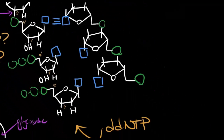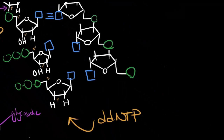Do you remember ddNTP? How is this different from a normal dNTP? Well, the two D's stand for dideoxy, meaning it's lost oxygen twice over. The 3' carbon of ddNTP doesn't have an oxygen, which prevents it from being able to have a new nucleotide added onto it.